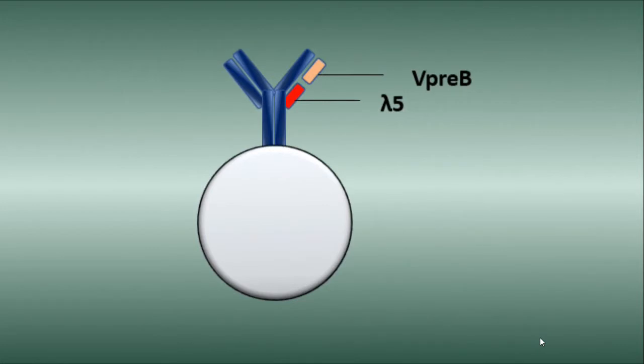At a certain point, such as the large pre-B cell stage, rearrangement of the heavy chain will stop, and this will ensure that the antibodies on the B cell express only one allele and express only one specificity.